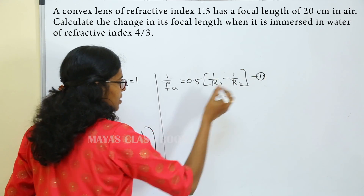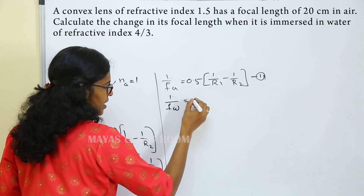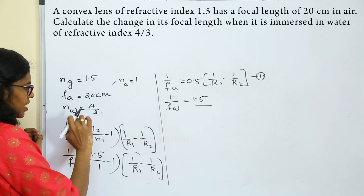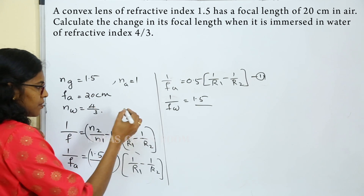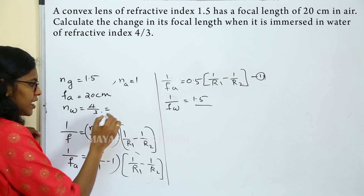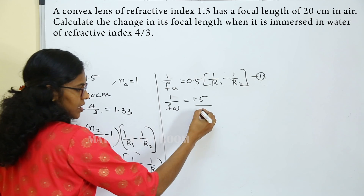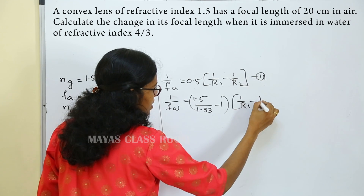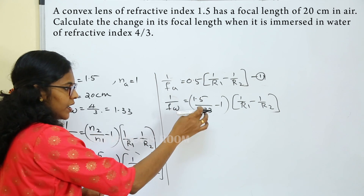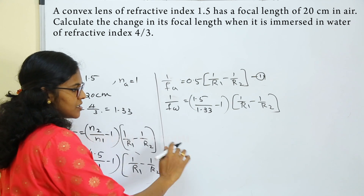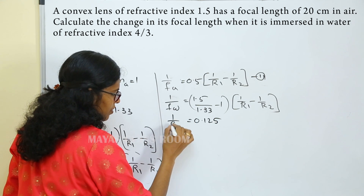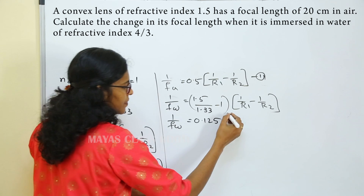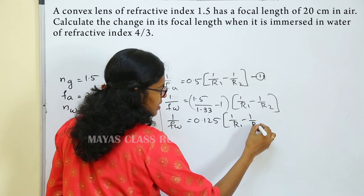For air: n2 is 1.5, so 1 by F air equals (1.5 minus 1) into (1 by R1 minus 1 by R2), which gives 0.5 into (1 by R1 minus 1 by R2). For water: n1 is 4 by 3, so 1 by F water equals (1.5 divided by 1.33 minus 1) into (1 by R1 minus 1 by R2).